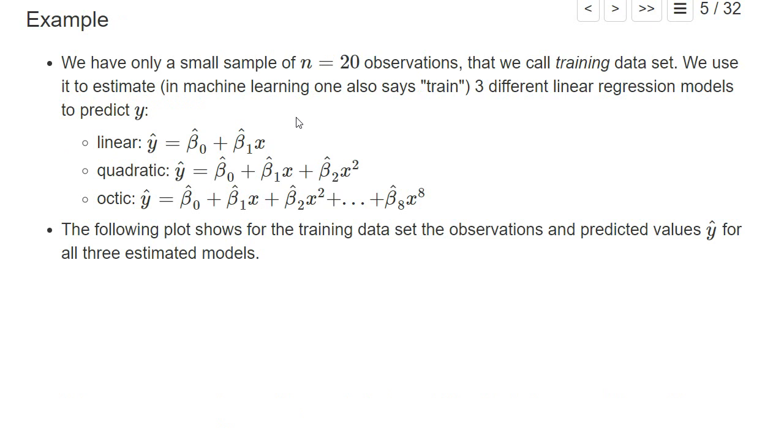Let's use this function to generate a small sample of 20 observations, which we call the training data set. We start with linear regression models, which are perfectly fine for predicting, and later we will come to a more complex machine learning model, in particular random forest. We estimate three different regression models: the first is just a linear model explaining y by a linear function of x, the second is a quadratic model where y can depend on x and x squared, and the last one is an octic model where y can depend on x, x squared, and so on up to x to the power 8.